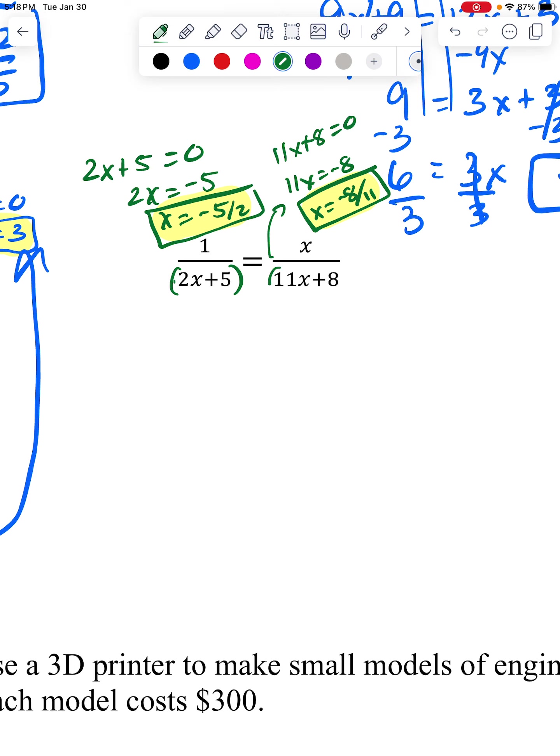So let's cross-multiply. This one's not terrible because it's just one times that, so it just stays 11x plus eight. This one is also not terrible, but it's different than we've seen. I don't have to FOIL. I just have to distribute an x. When I do, I get 2x squared plus 5x.